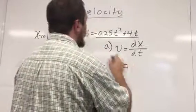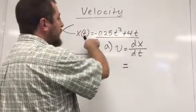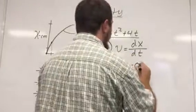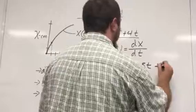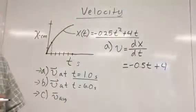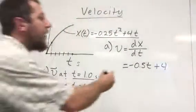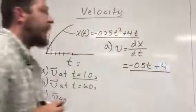If I take the derivative, this becomes negative 0.5t plus 4. The velocity—this describes the velocity of my object.